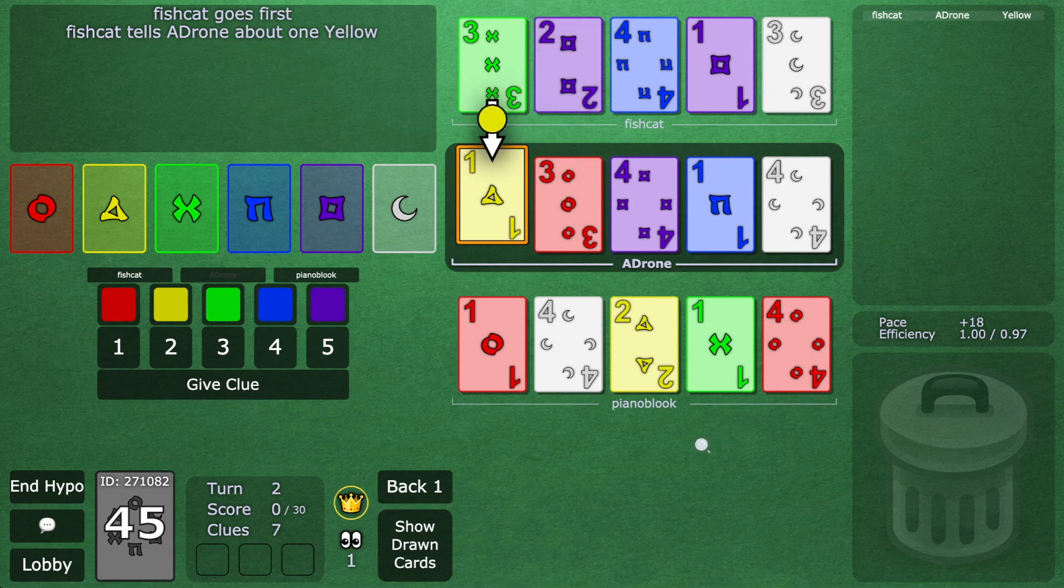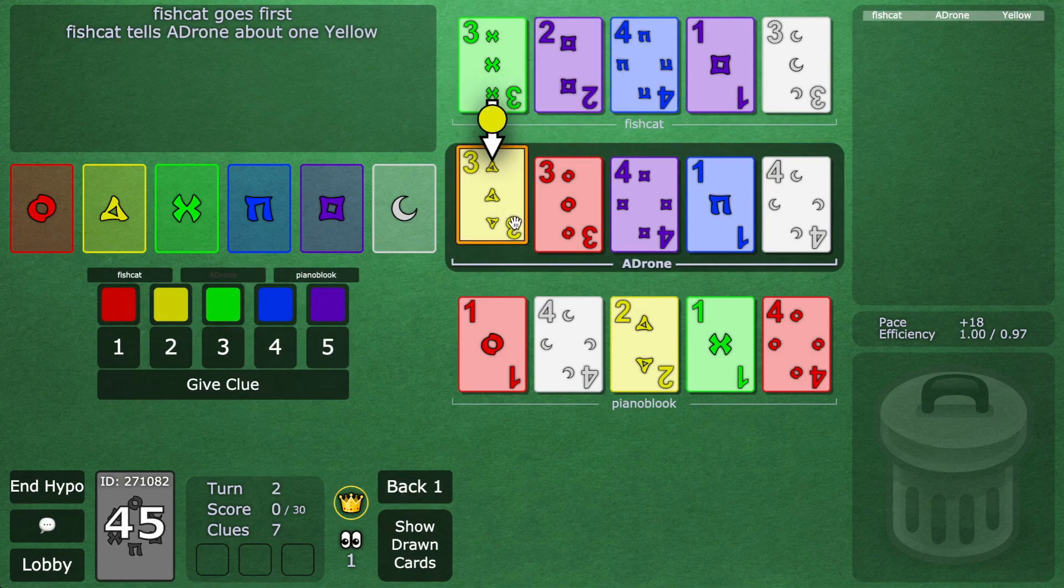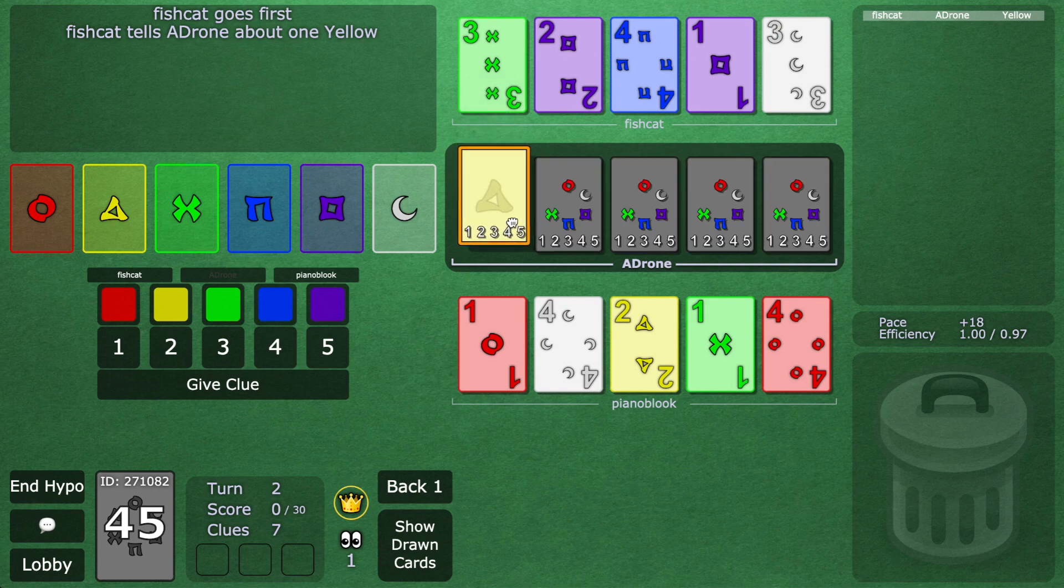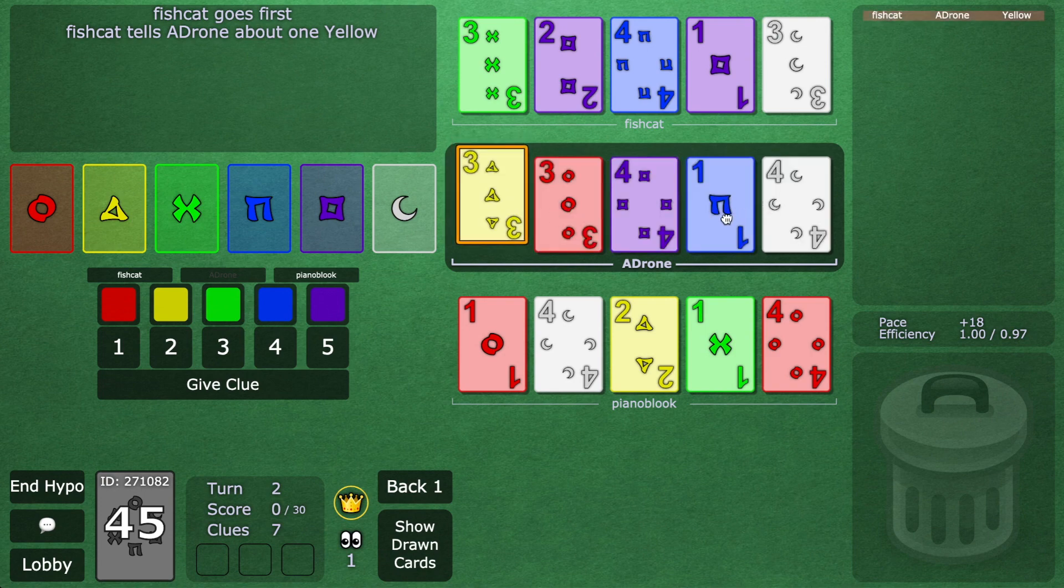Fishcat can do a dirty, dirty lie. What if Fishcat gives the same clue in this scenario? It's still Adron's turn. He must assume that this is a shadow, right? Because what on earth could this card be otherwise? So, the shadow's still on.